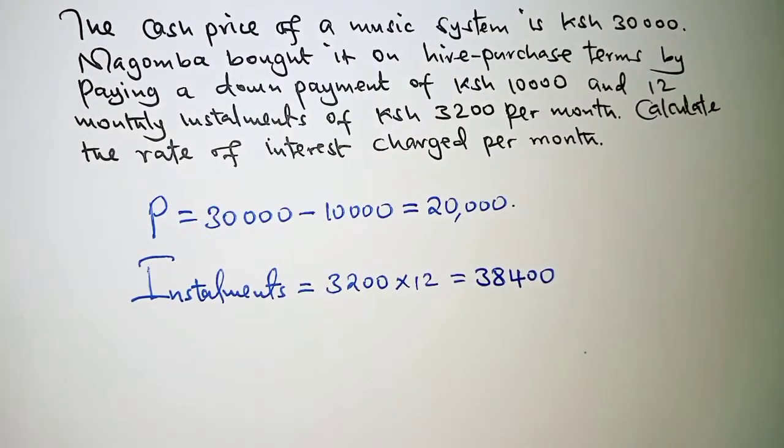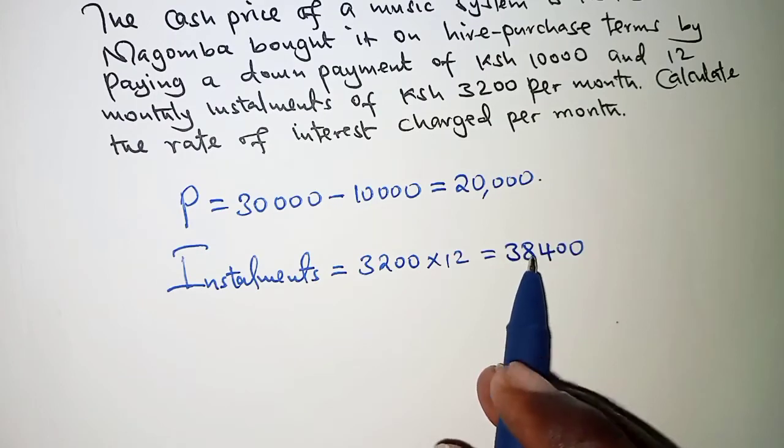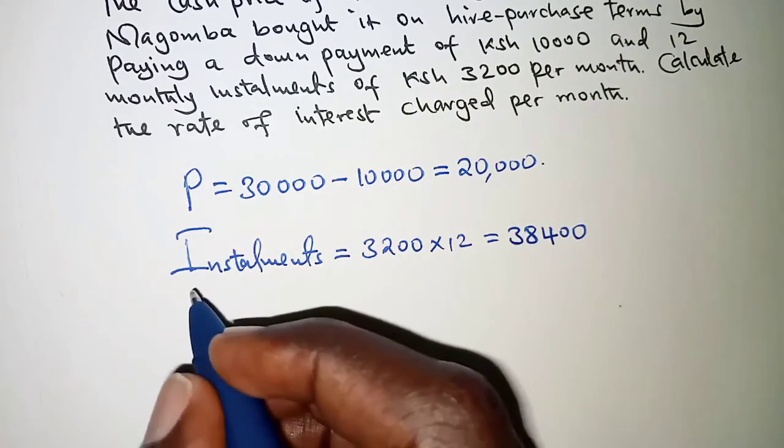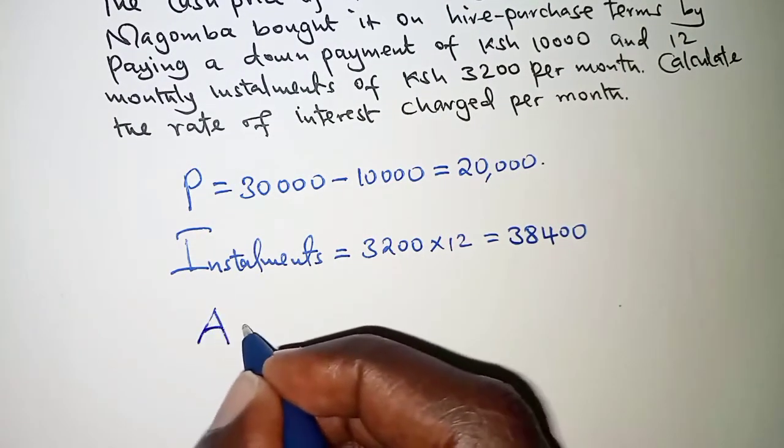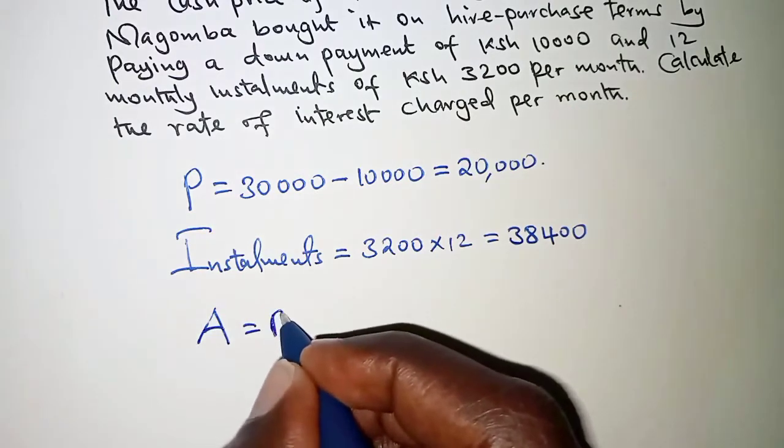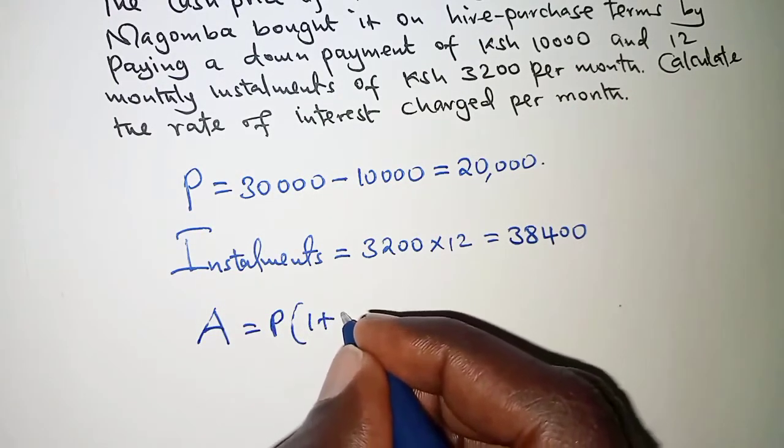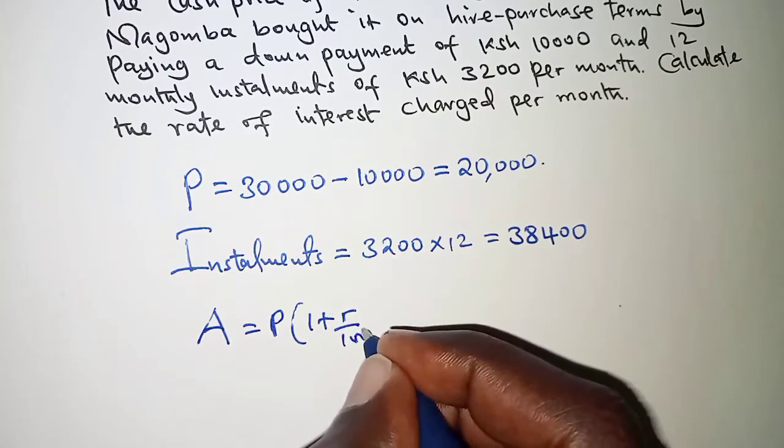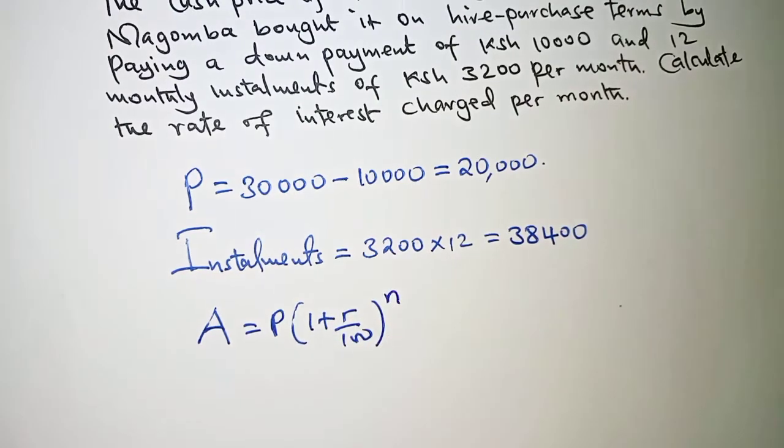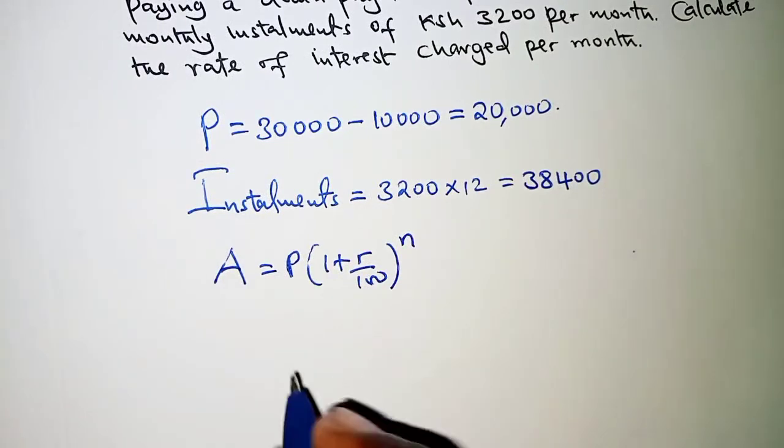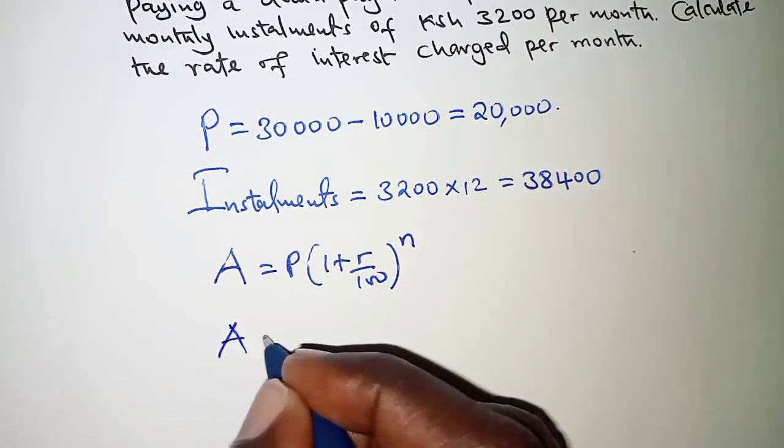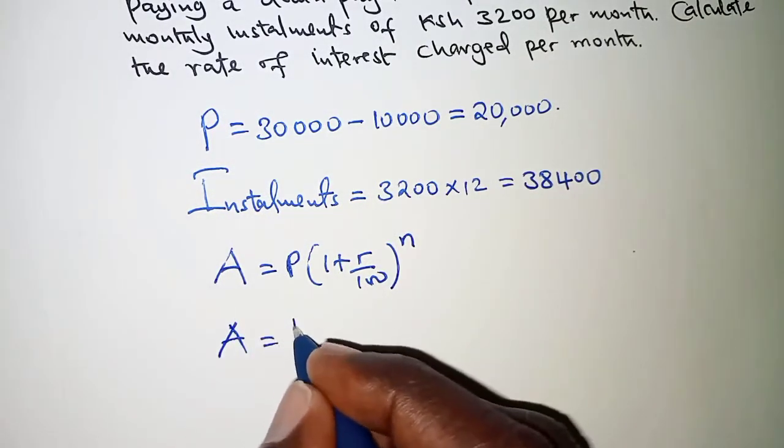So in order to determine the interest, we'll simply have the compound interest formula which is given by A equals P times 1 plus r over 100 raised to power n. And for this case, the amount should be equivalent to the installments.